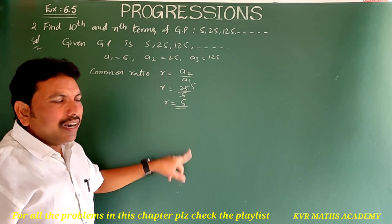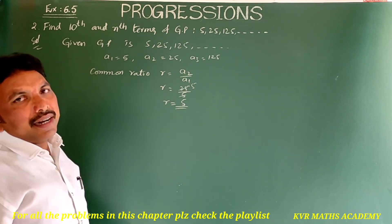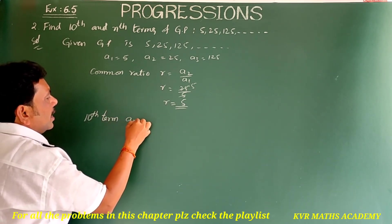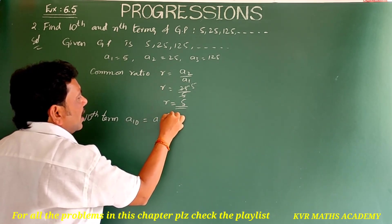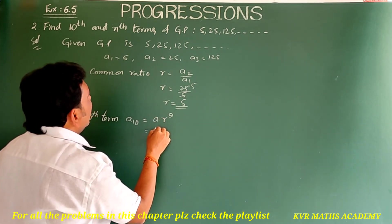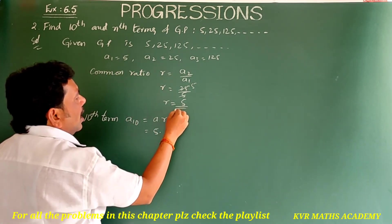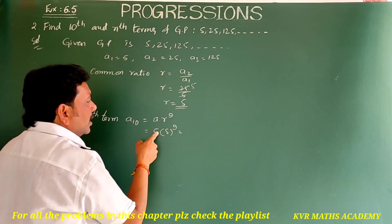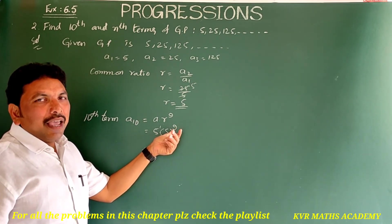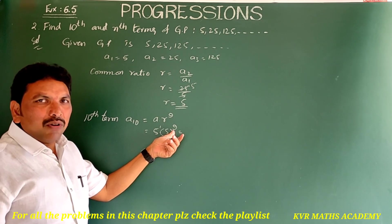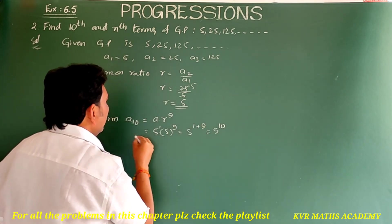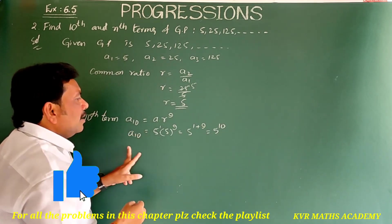We have to find the 10th term. A10 = a × r^9 = 5 × 5^9. Since 5 = 5^1, we have 5^1 × 5^9 = 5^(1+9) = 5^10. So the 10th term A10 = 5^10.